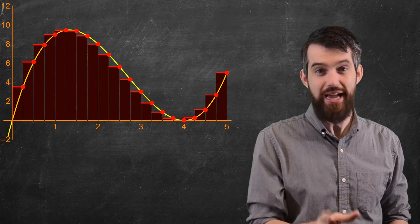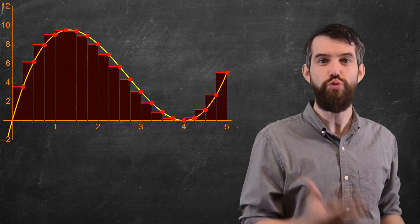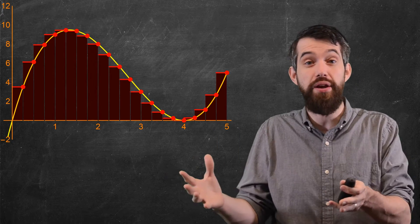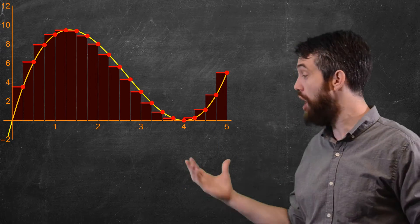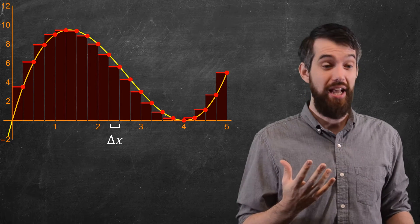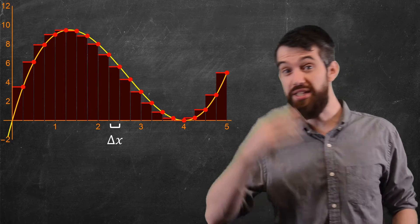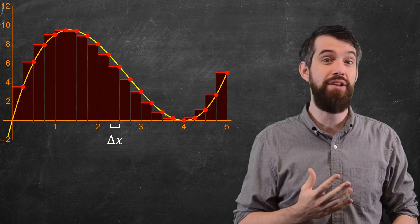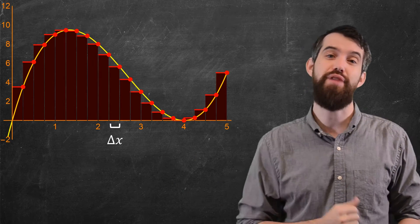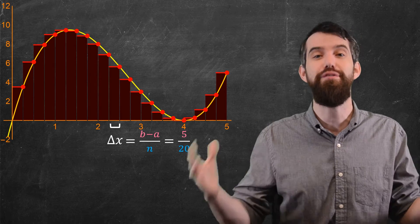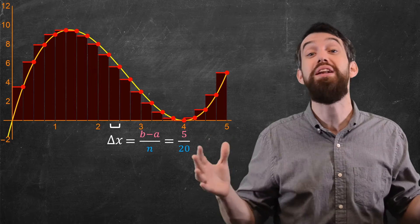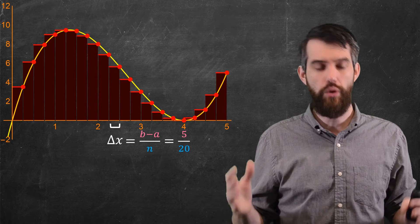Now, there's a crucial thing to pay attention to here, which is the width of these rectangles. They're no longer 1 like they were in the beginning. Now I've got a little delta x. And indeed, my delta x in general is b minus a divided out by n. So in this case, 5 divided by 20 is I've taken a width of 5 and divided it into 20 different subintervals.